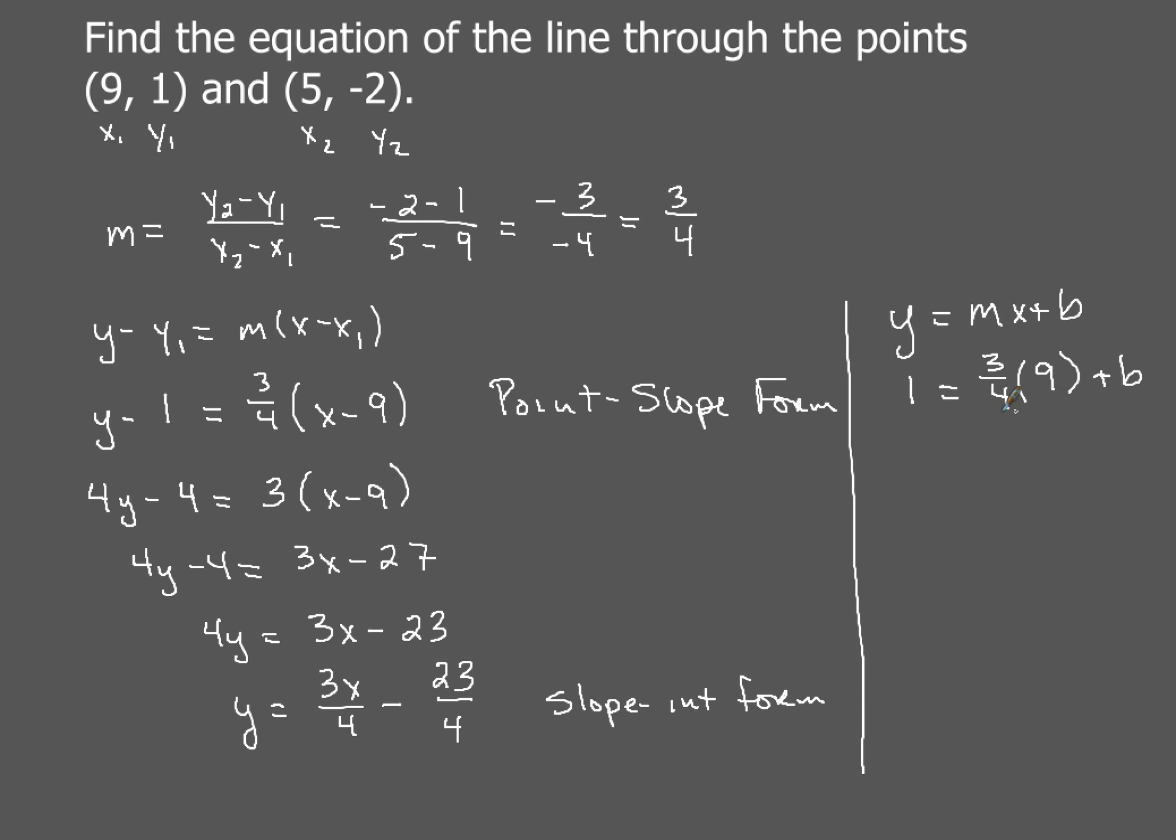I don't know what b is, but that's what we're trying to figure out. So when I multiply 3 fourths times 9, that's the same thing as 9 over 1. So when you multiply that, you'll get 27 over 4 plus b. Now I'm going to move the 27 over 4 to the other side. So I'm going to have 1 minus 27 over 4 equals b.